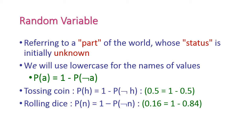Taking the coin-tossing example: to get heads, P(H) = 1 − P(¬H). If P(H) is 0.5, then 0.5 = 1 − 0.5, or 0.5 + 0.5 = 1. For rolling a dice, the probability of getting any particular number is P(N) = 1 − P(¬N). The value P(N) is 0.16, so 0.16 = 1 − 0.84, meaning 0.16 + 0.84 = 1.